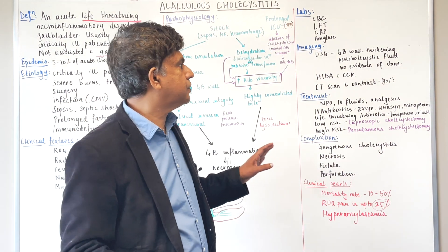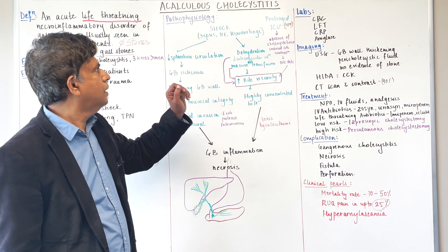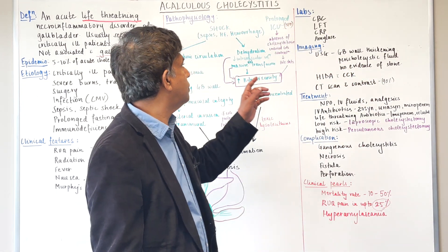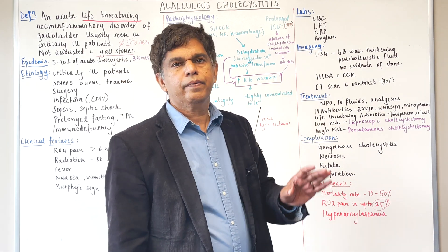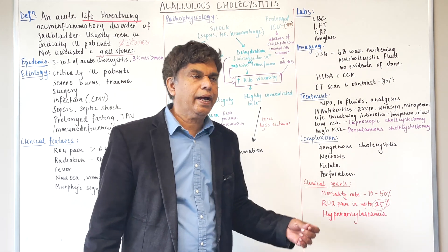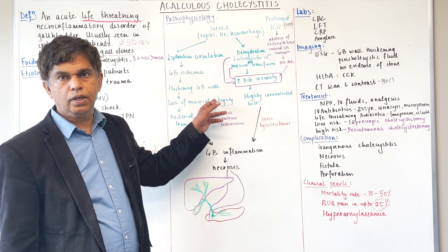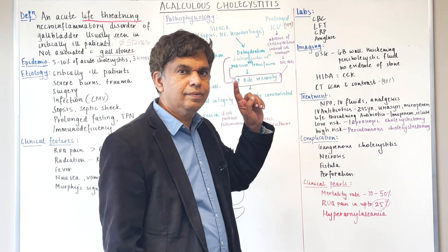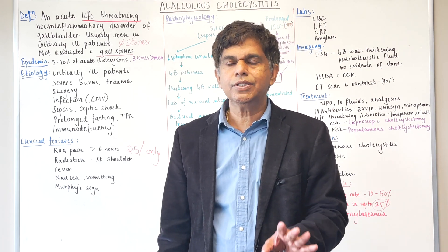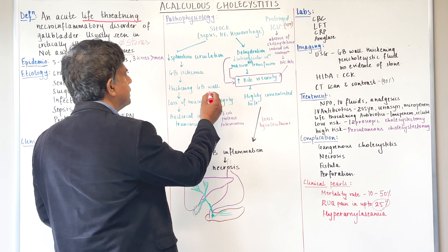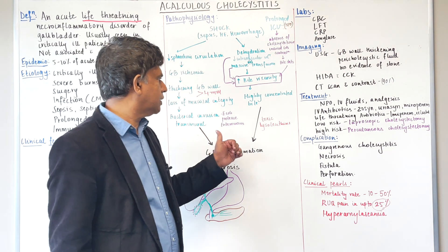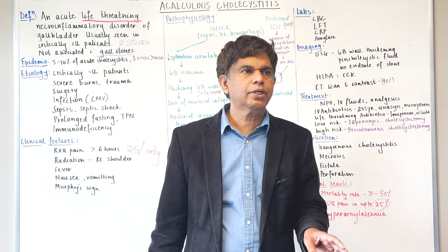Looking at pathophysiology: the main drivers are shock, sepsis, heart failure, and hemorrhage — any situation where blood circulation is compromised, especially splanchnic circulation. When blood pressure drops, you get decreased splanchnic circulation, then ischemia, then thickening of the gallbladder wall beyond the normal 4 mm. This leads to loss of mucosal integrity and bacterial invasion. The most common bacteria is E. coli, followed by Proteus and Enterococcus.